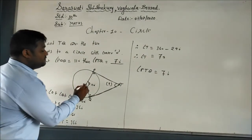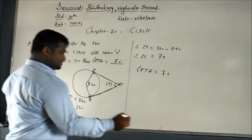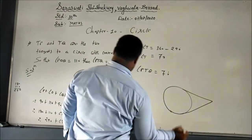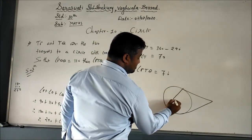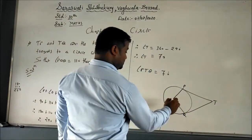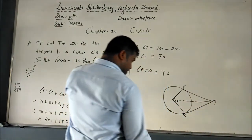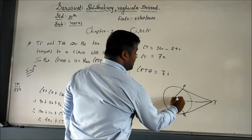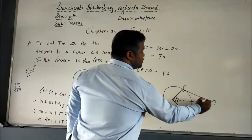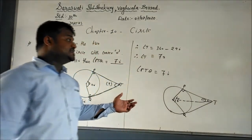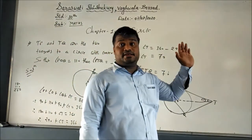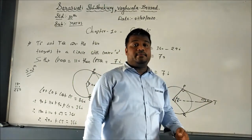Such angle-sum problems may also appear where they divide the angle differently. For example, if angle POT = 40 degrees, you can find angle PTQ similarly using the same angle-sum property of 360 degrees. Once you understand this addition, it becomes easy. Please prepare Theorem 10.2 and solve such sums in your worksheet. Thank you.